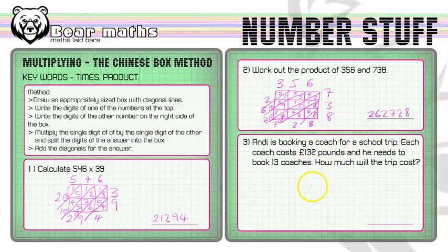In question three, we've got Andy, and he's booking a coach for a school trip. Each coach costs £132 and he needs to book 13 coaches. How much will the trip cost? Basically, we just have to recognize that we need to multiply this by this. Some people would do 132 plus 132 plus 132 thirteen times - that is what multiplication is - but we could just do it quickly using our Chinese box method.